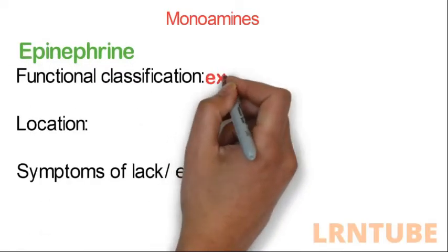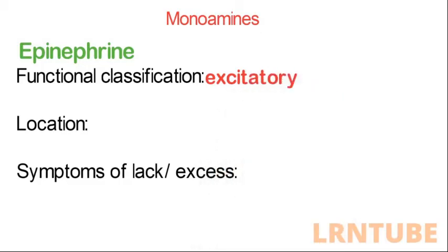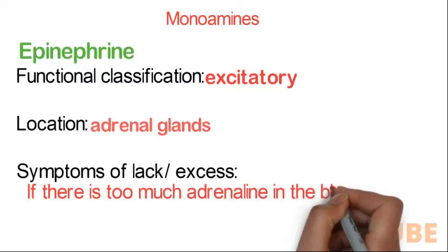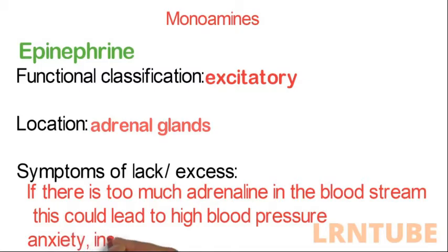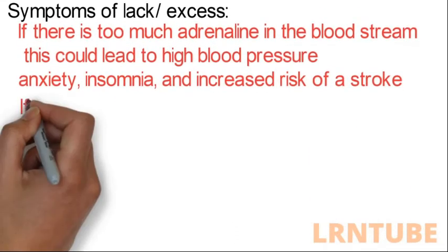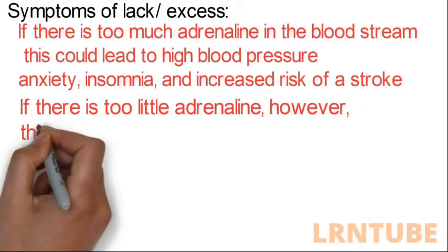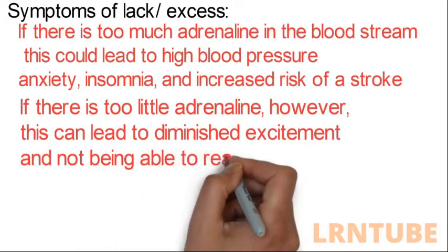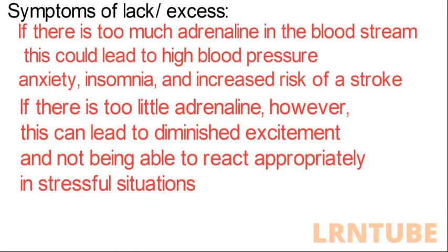Under monoamines, we have epinephrine, norepinephrine, histamine, dopamine, and serotonin. Epinephrine is classified as an excitatory neurotransmitter located in the adrenal gland and is also known as adrenaline. It is considered both a hormone and a neurotransmitter. Too much adrenaline can lead to high blood pressure, anxiety, insomnia, and an increased risk of stroke. Too little can lead to diminished excitement and an inability to react appropriately to stressful situations.